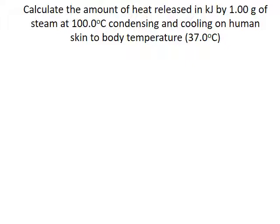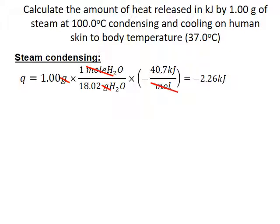In a steam burn, the heat released actually comes from two processes. First, the condensation of steam to liquid water. And second, the liquid water releases additional heat as it cools from 100 degrees Celsius to body temperature. To calculate the full amount, we need to calculate the heat released in each individual process and add them together. We calculated the heat released by one gram of steam condensing in the last problem: it's negative 2.26 kilojoules.